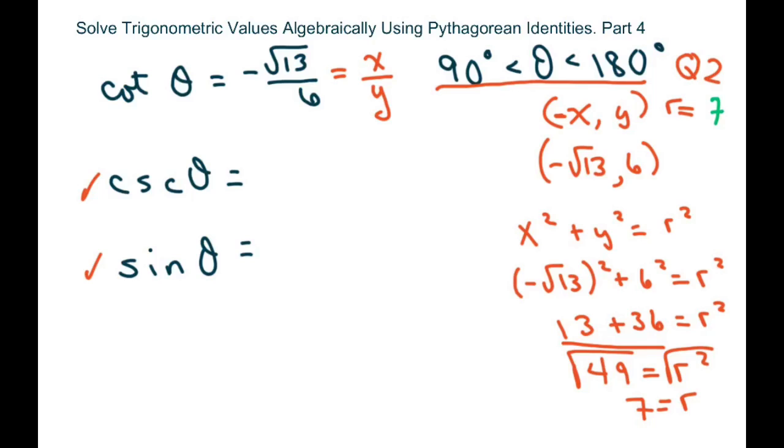So for cosecant, let's do sine first. Sine is y over r. So our y is 6 and our r is 7.